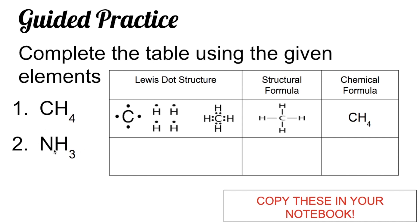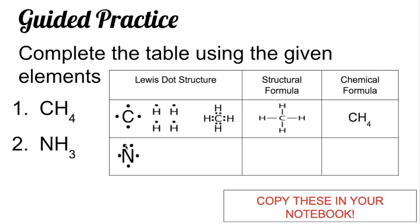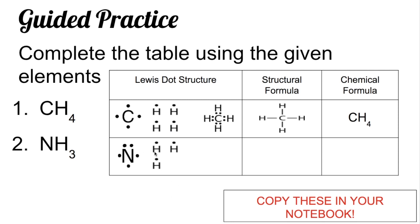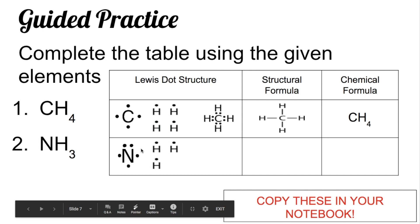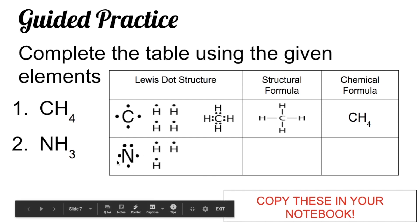For the second example, according to the chemical formula NH3, there is one atom of nitrogen and three atoms of hydrogen. Nitrogen belongs to group 5A, so it should have five valence electrons: 1, 2, 3, 4, 5. Hydrogen belongs to group 1A, so it has only one valence electron, and we have three hydrogen atoms. Nitrogen needs three more electrons to satisfy the octet rule, so each hydrogen electron is shared with nitrogen.